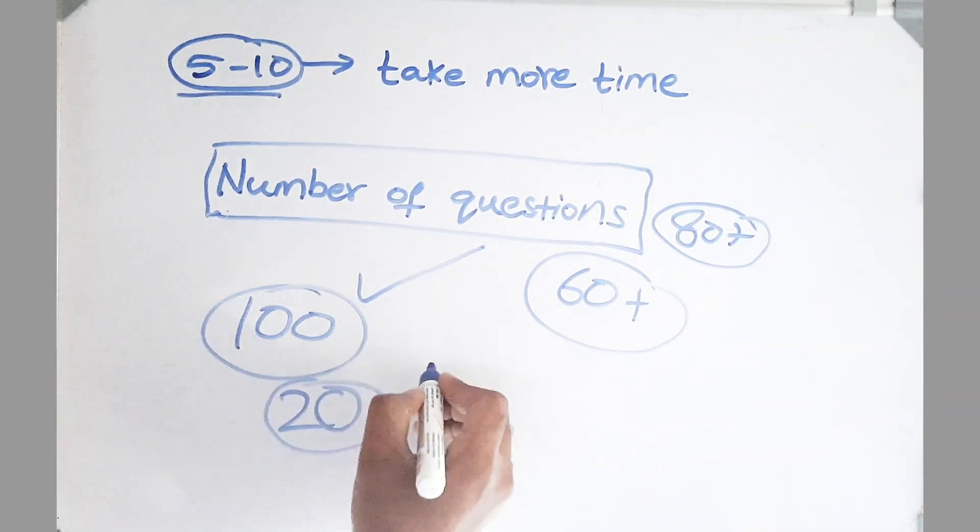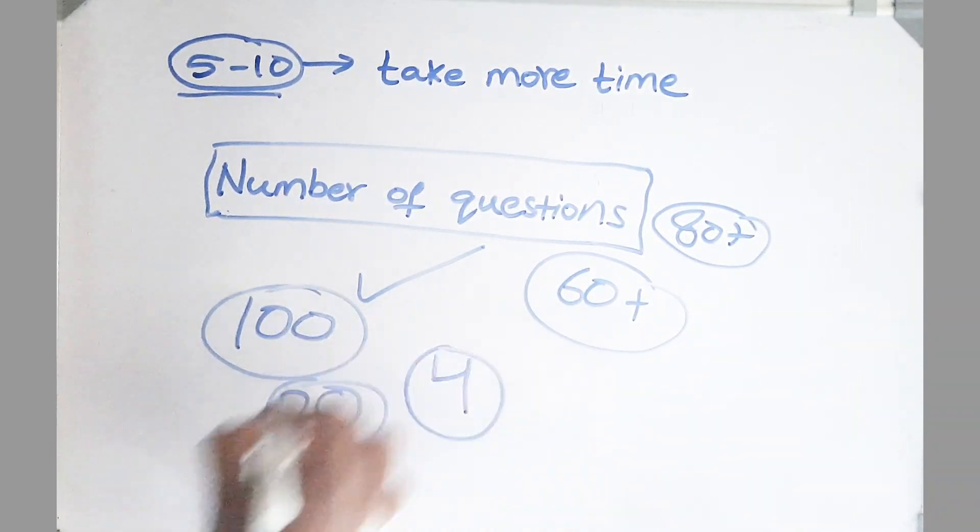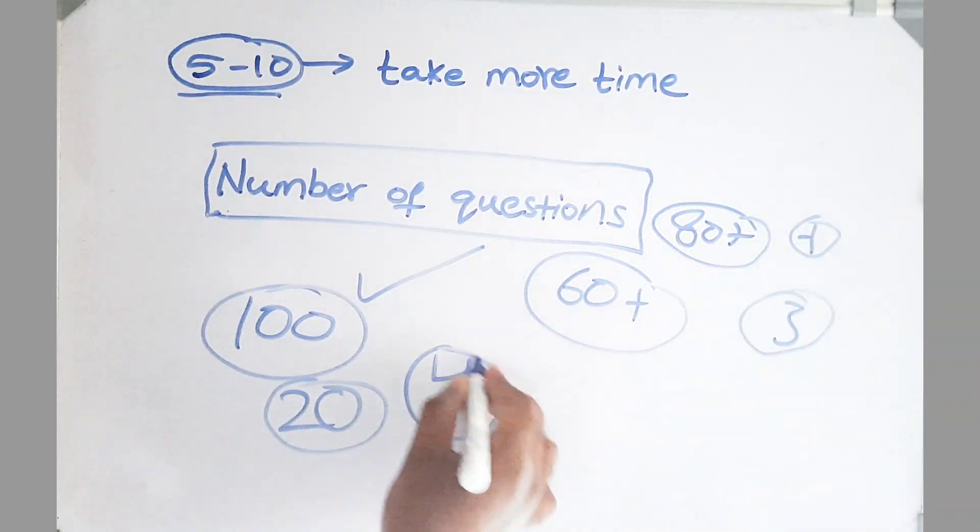Friends, because if you correct one silly mistake, you will be getting 4 marks. But if you do any more new question, you will be getting 3 marks. Which is more advantageous? Correcting the silly mistakes.